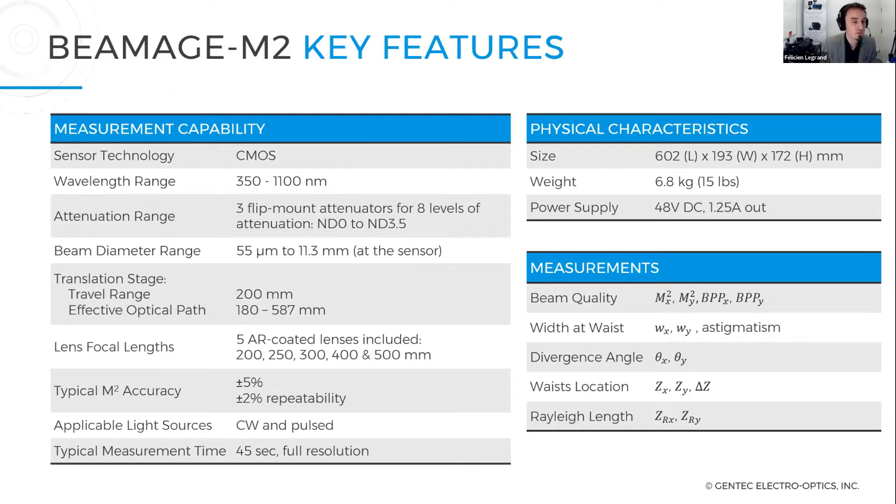Quickly, some key features of this system. It's a CMOS based sensor using a camera to cover visible and IR wavelengths. It comes with a set of three ND filters to avoid saturation to the camera. Basically, once you find the right combination of ND filters, leave them there and you have the proper attenuation for your scanning. It comes as well with a set of five lenses.